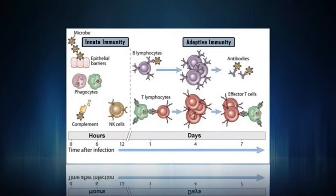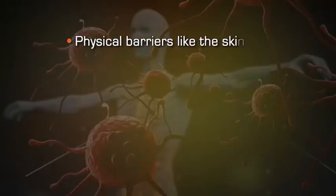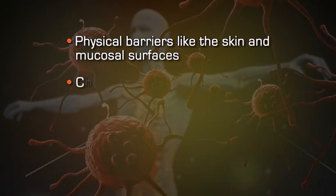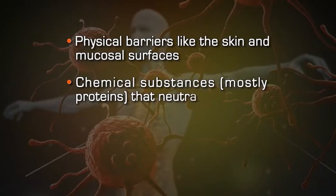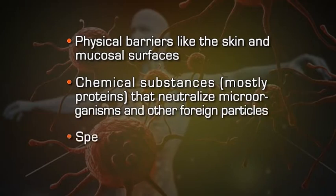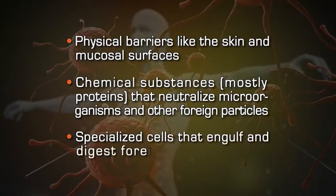Now, innate and adaptive immunity. Immunity is part of a complex system of defense reactions of the body. These defense reactions can be innate or acquired. Innate or natural immunity refers to the work of mechanisms that pre-exist the invasion of foreign substances. These include physical barriers like the skin and mucosal surfaces, chemical substances mostly proteins that neutralize microorganisms and other foreign particles, and specialized cells that engulf and digest foreign particles. The mechanisms of innate immunity are non-specific, meaning they do not discriminate between different kinds of foreign substances.